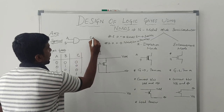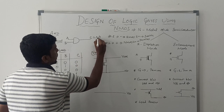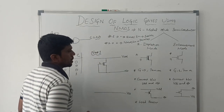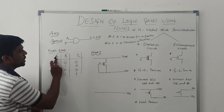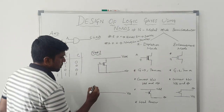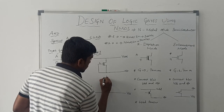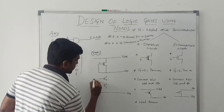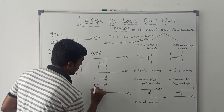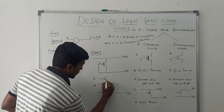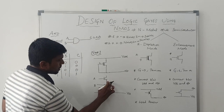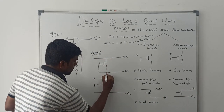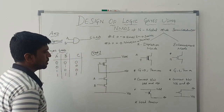Before drawing the pull-down network, we follow the rules. The AND operation is A dot B. In this boolean expression, the dot operator is present, so the NMOS enhancement mode transistors are connected in series. We have two variables A and B, and each variable corresponds to one transistor. Since the dot operator is present, these two transistors are connected in series — one for input A and one for input B. This NMOS enhancement transistor network is connected between VSS and the output.